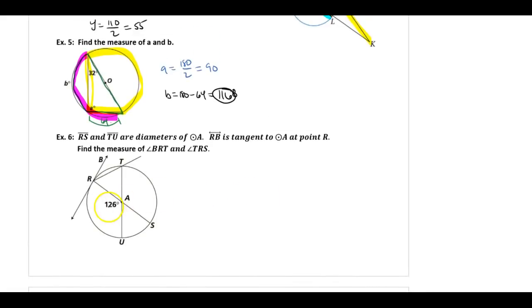In example 6, that's 126, this is 126, these add up to 180 so that's 54, that makes that 54. I know this arc is 54, 126, 54, 126. They want us to find angle BRT and TRS. BRT intercepts this 54 degree arc. Since the vertex is on the circle, angle BRT equals 54 divided by 2, which is 27 degrees.